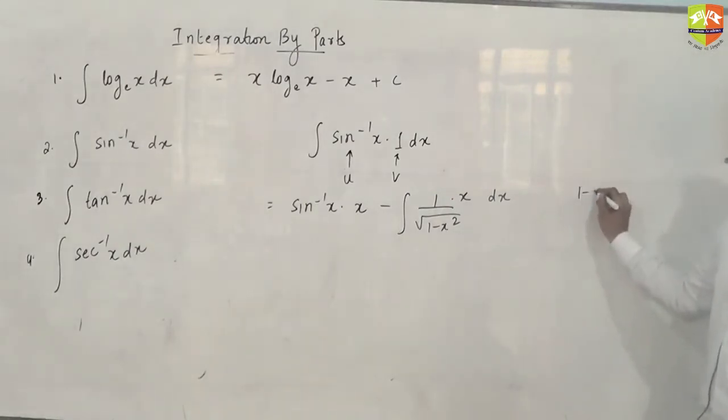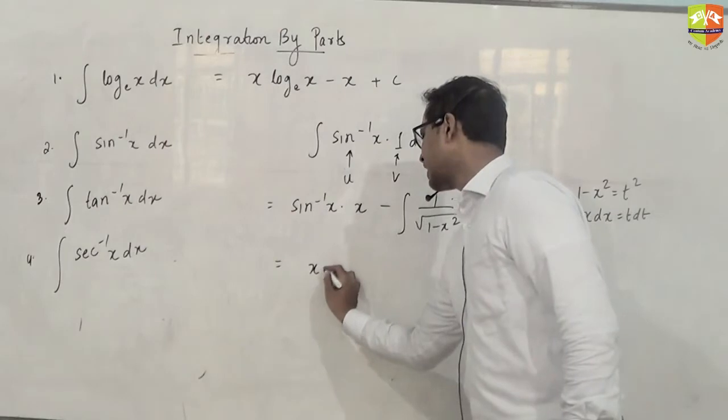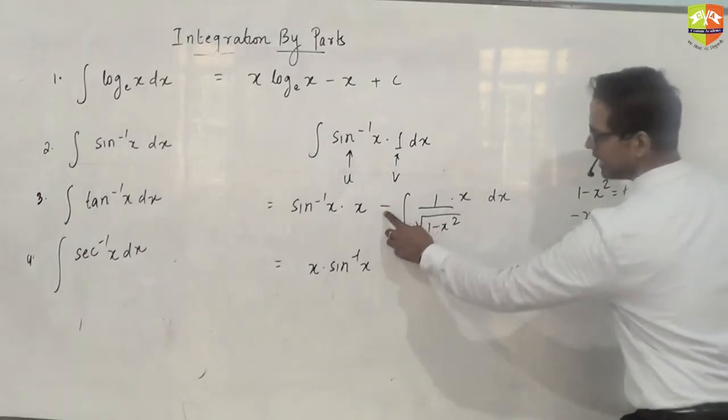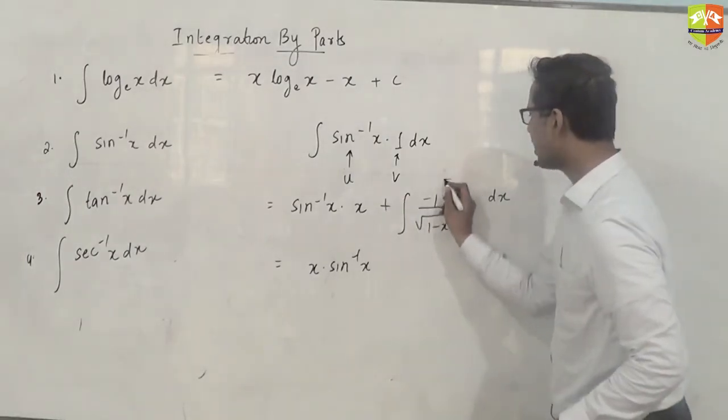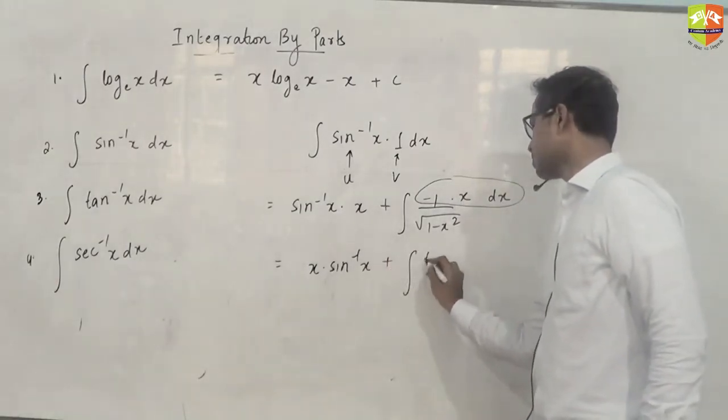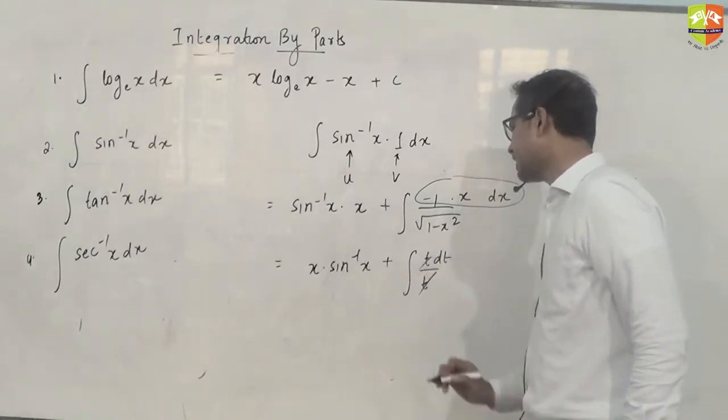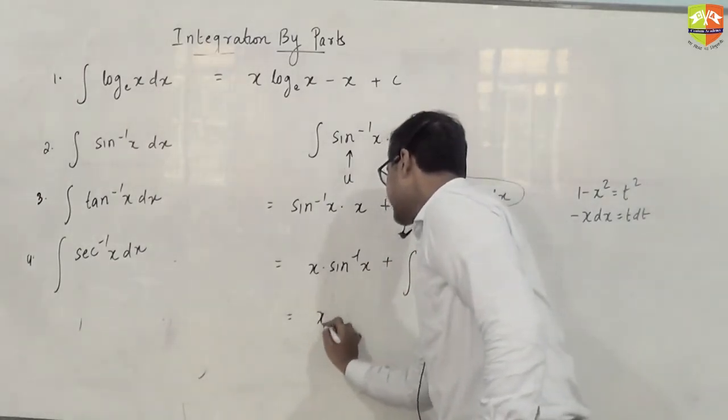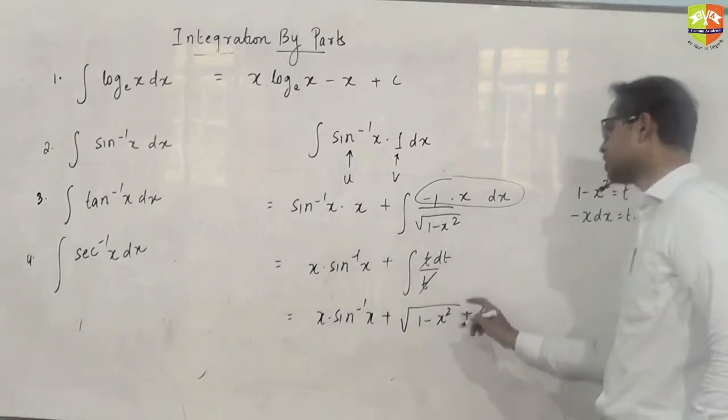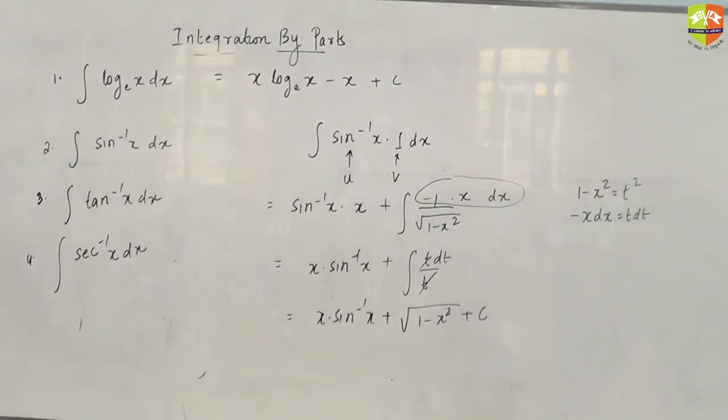Now in this case, you can substitute 1-x² as t. So -2x dx will become dt. So this converts as sin inverse x times x. You can take the minus sign with it and write -x dx as dt/2. So the integral simplifies, which gives you the answer as x sin inverse x plus √(1-x²) plus c.